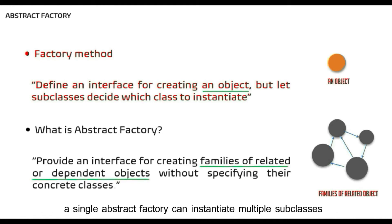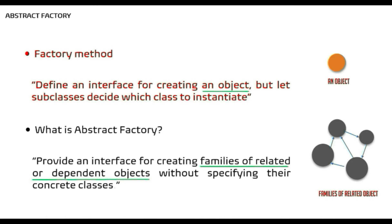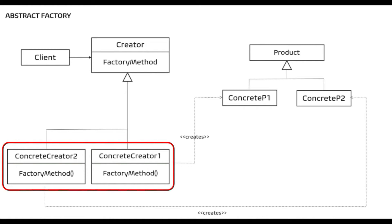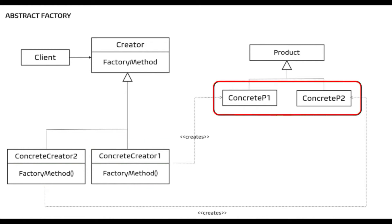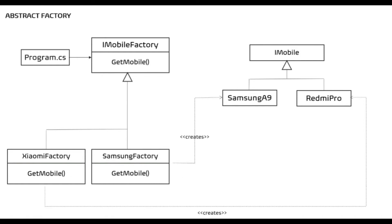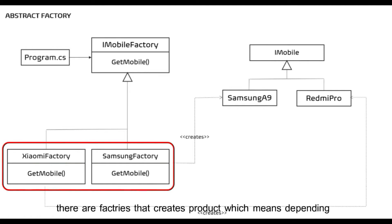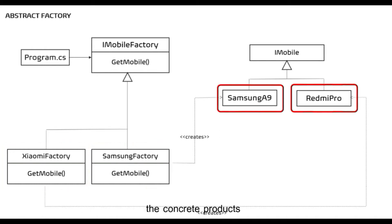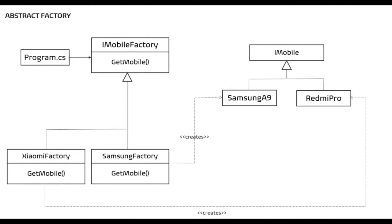A single Abstract Factory can instantiate multiple subclasses. Let's look at the Factory Method UML diagram first. We have a factory interface implemented by concrete factories, and each concrete factory creates a type of product which is returned to the client. In our specific Factory Method implementation, the product was iMobile. To summarize: factories create products — depending on which concrete factory the client uses, it creates the concrete products. I have discussed this in detail in my last video.